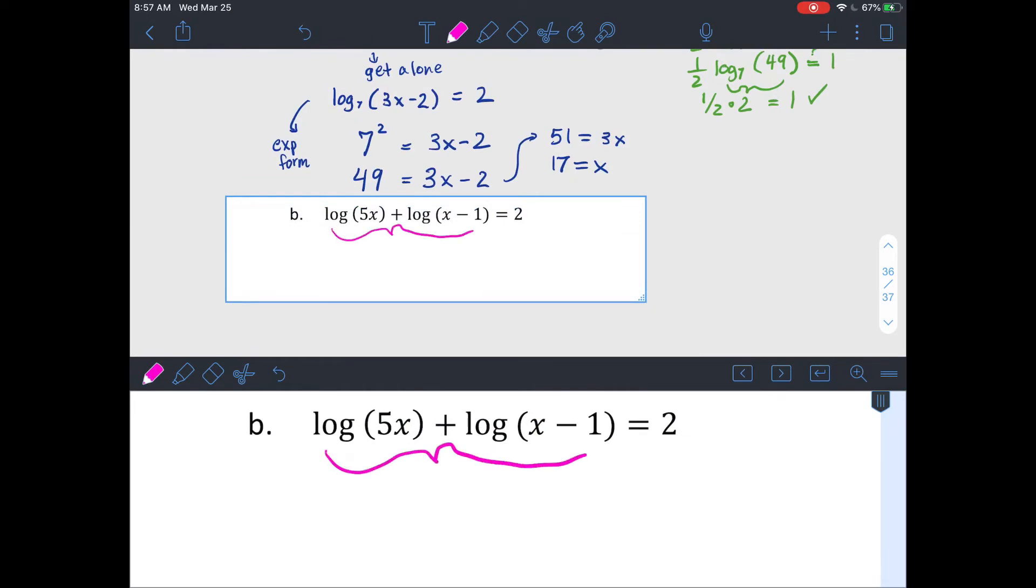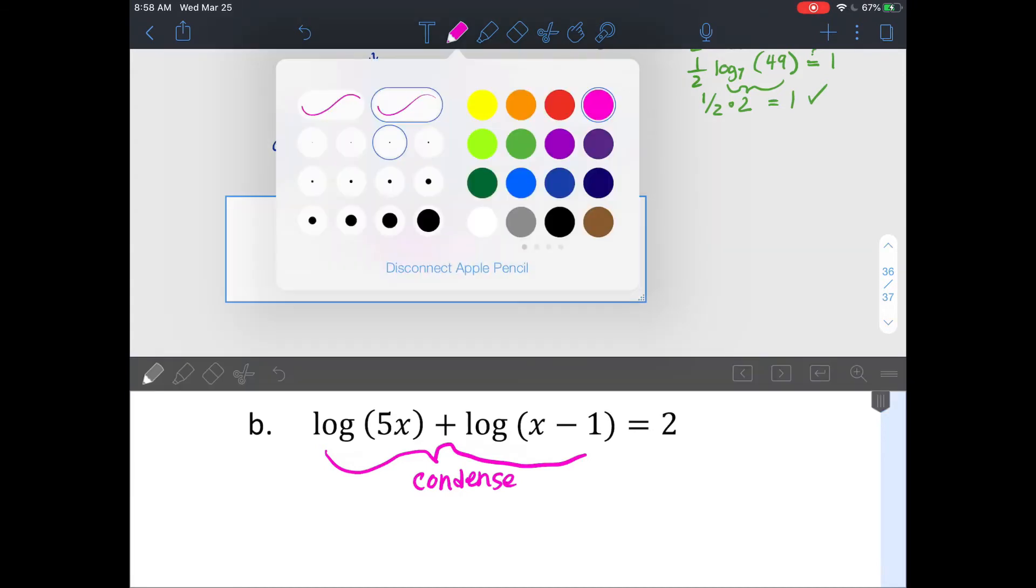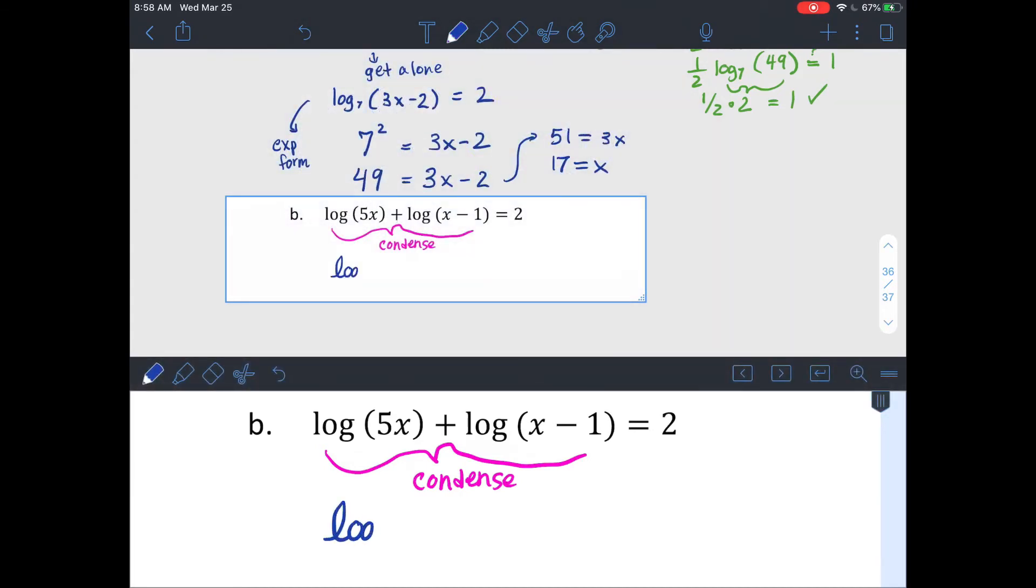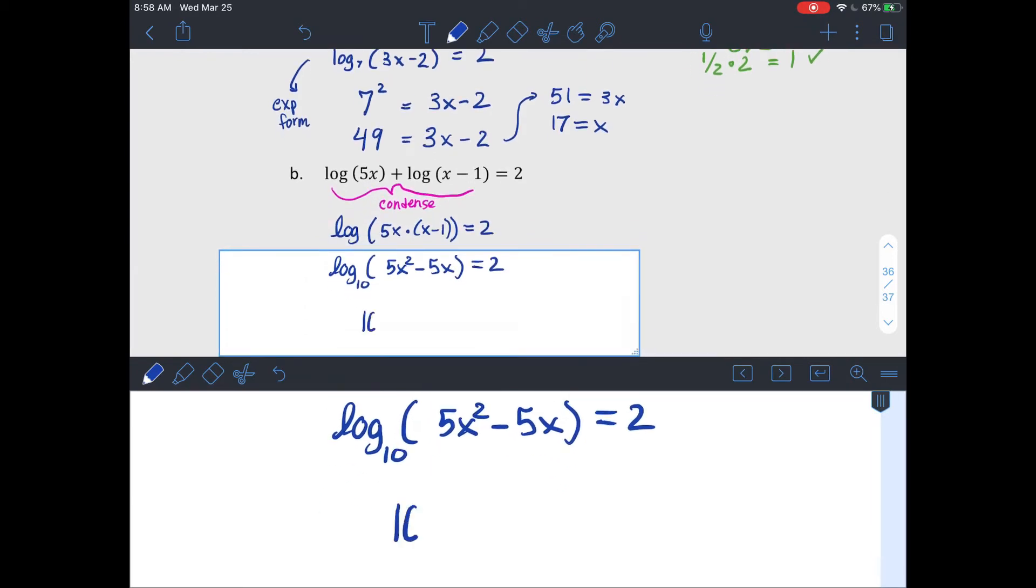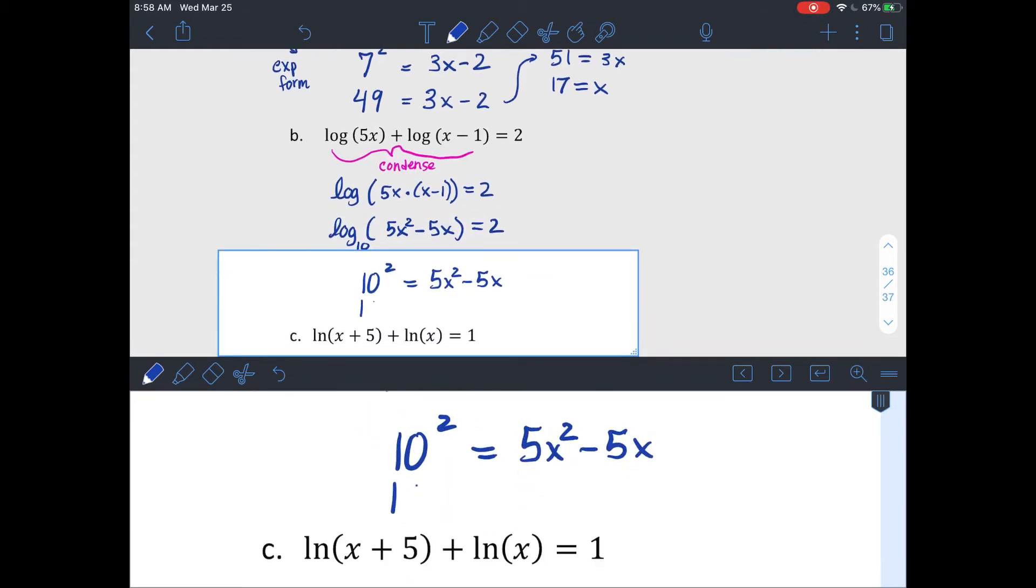If you have two separate logarithms, not one on each side of your equation, you're going to want to condense this into a single logarithm. So if you have addition, when you condense that back, it's your values inside being multiplied together. So it's going to look like that. Remember that if you have log with no base written, it's base 10. Then I'm going to rewrite it in exponential form, 10 squared equals my 5x squared minus 5x. 100.